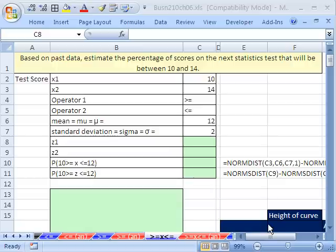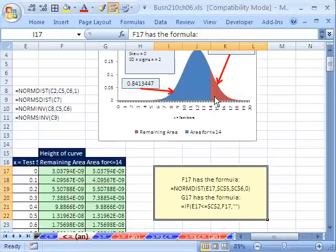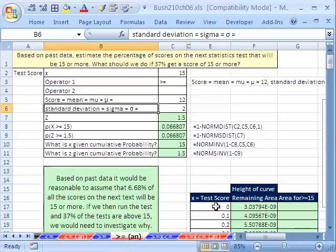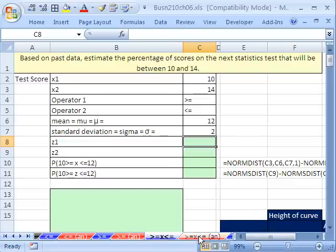We're talking about normal probability distributions. We just got done calculating probability less than a particular x and greater than a particular x, and now we want to talk about between.